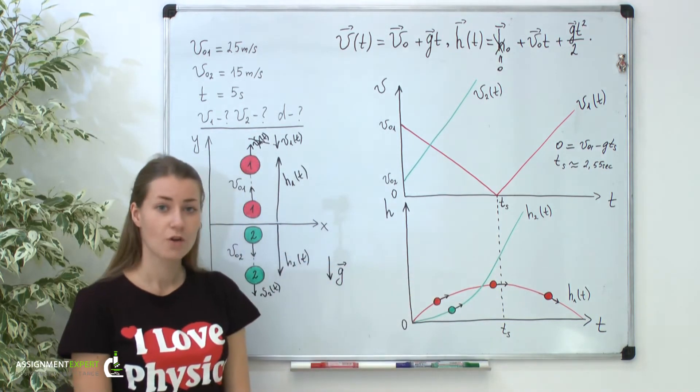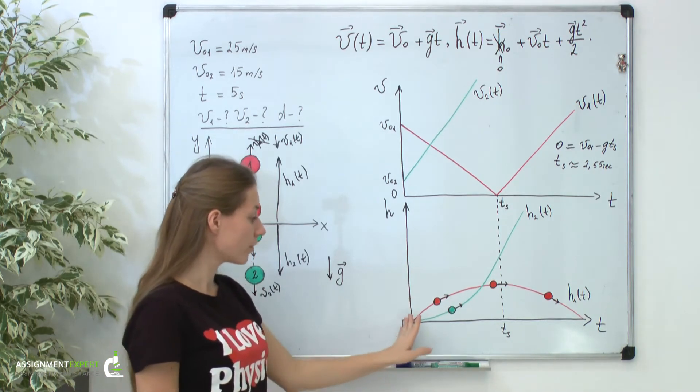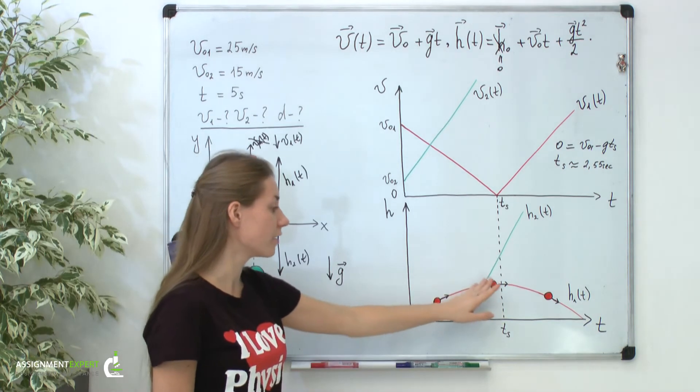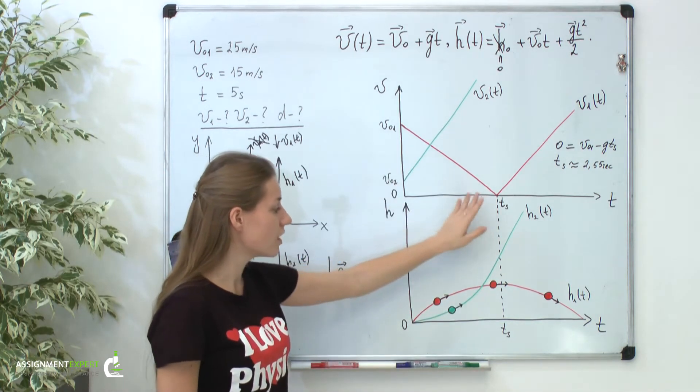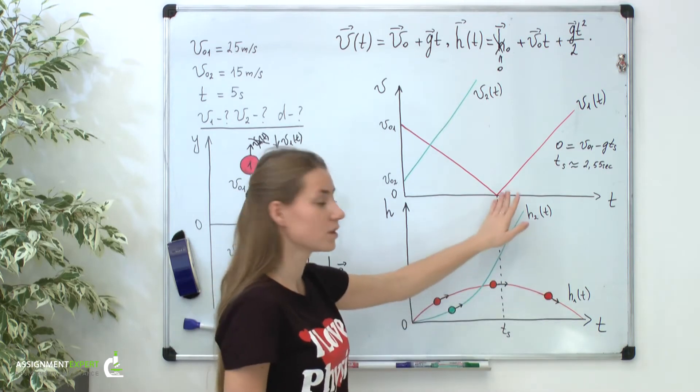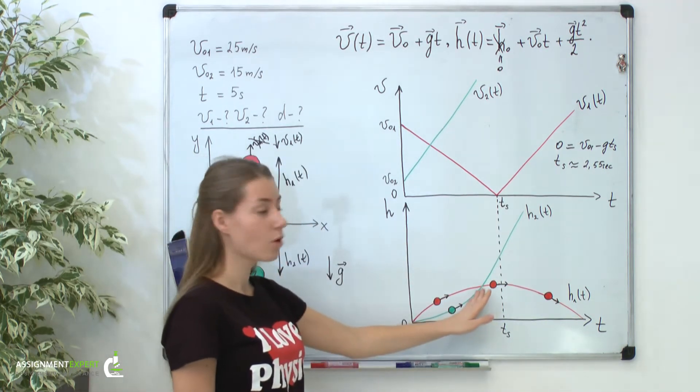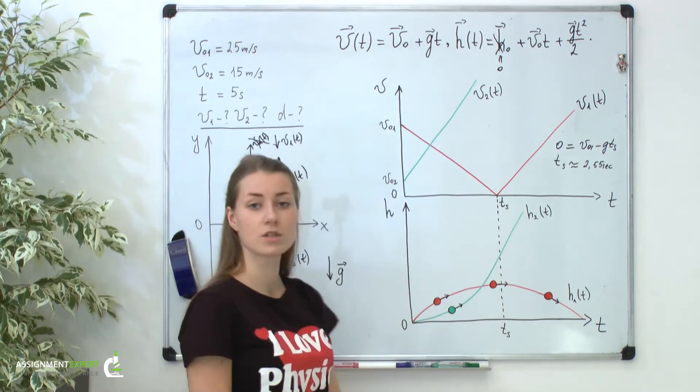All in all, from these two graphs we can extract the following information. Our red ball flies higher and higher with decreasing velocity. Then at this point it stops and starts to fall down with increasing velocity. At the same time, the distance to our green ball and its velocity increases all the time.